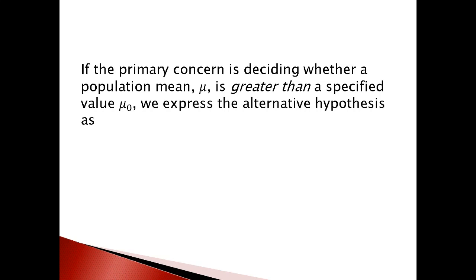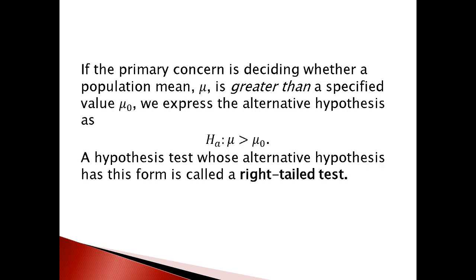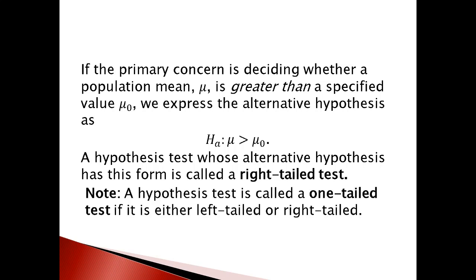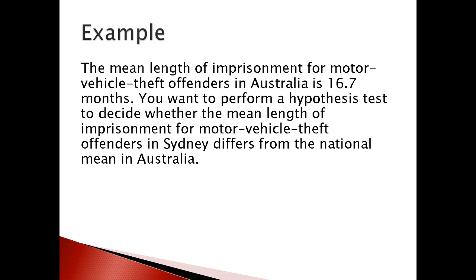Finally, if our main focus is deciding whether a population mean is greater than a specified value μ₀, we write the alternative hypothesis using the greater-than sign. This kind of alternative hypothesis is called a right-tail test. A hypothesis test is called a one-tail test if it is either a left-tail or right-tail test. If you have a not-equals sign, that means it's a two-tail test.